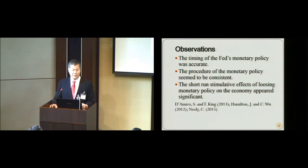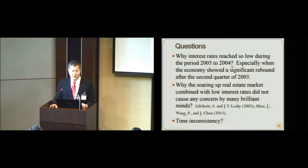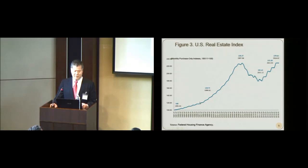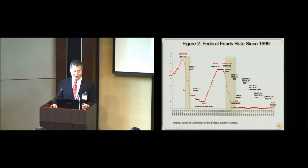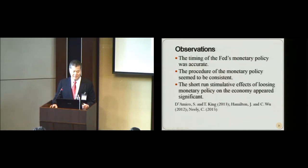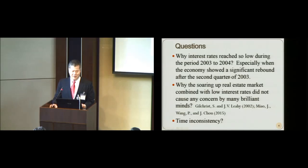However, we have questions. Why did the interest rate reach so low during the period 2003 to 2004, especially when the economy showed a significant rebound in the second quarter of 2003? Second, why did the showing-up real estate market — if we look at the real estate market index, it steadily increased and reached the highest level in June 2007 — combined with low interest rates not cause any concern by many brilliant minds? Is there a time inconsistency problem?